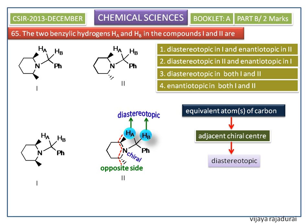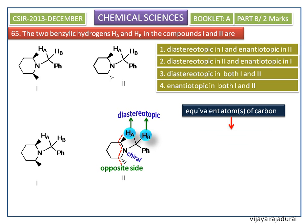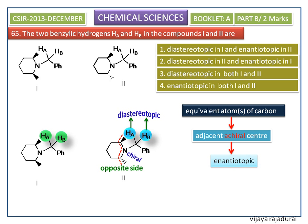Next, we consider the two equivalent hydrogens of the carbon present in structure 1. Here, the adjacent nitrogen atom's substituents are the same size, so it will have symmetry. The nitrogen is considered a chiral center, so these two equivalent hydrogens are said to be enantiotopic. Therefore, the correct answer is diastereotopic in 2 and enantiotopic in 1 — that is, the second option is correct.